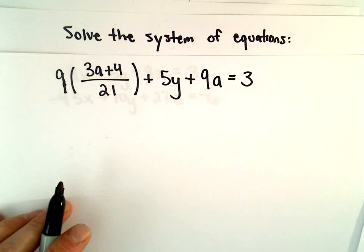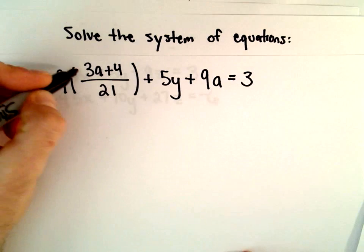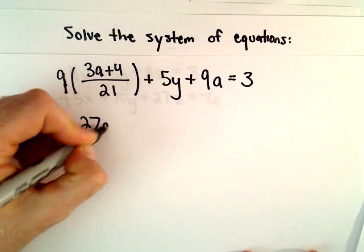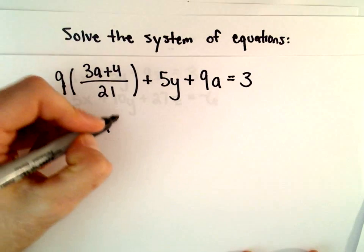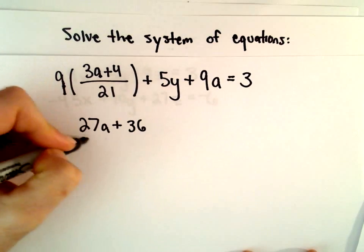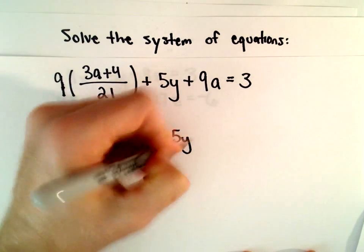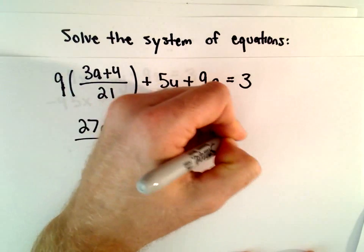I've got a little bit of arithmetic to do to simplify. I'm going to distribute the 9 to my first term. So 9 times 3a will be 27a. 9 times positive 4 will be positive 36. This is over 21. Plus 5y plus 9a equals 3.